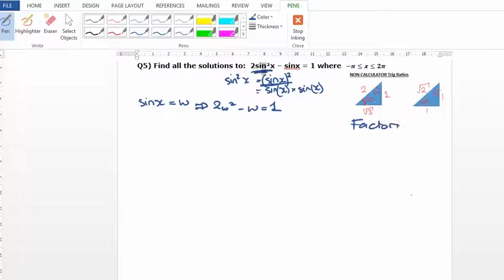If factorising doesn't work, the other method you've got is the quadratic formula if you're on a non-calculator paper. And then if you're on your calculator, your GDC, graphic display calculator, can solve it for you automatically. Just type in the functions and find the solutions. So let's go for the factorising option because this is a non-calculated paper.